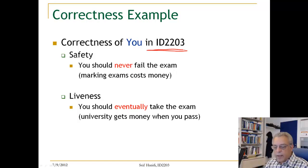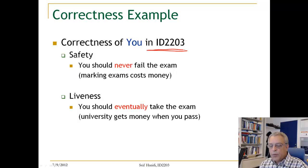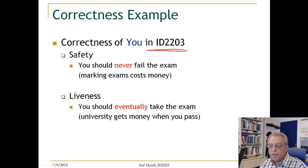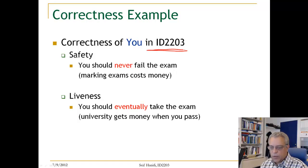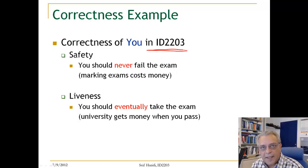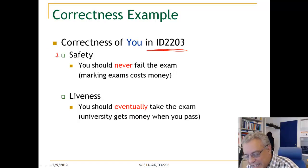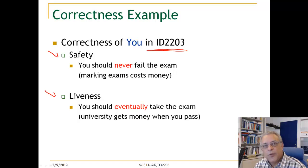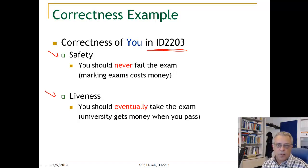For us, we would like to ensure that you always satisfy a safety property, which is that you should never fail in the exam. You should never fail because once you fail, it costs us money. That is safety. Liveness would be that we want you to eventually take the exam, because if you pass the course, the university will get money.